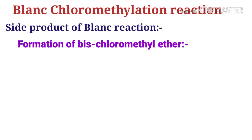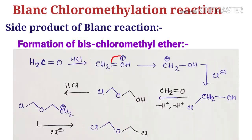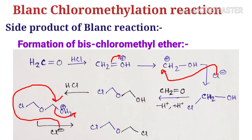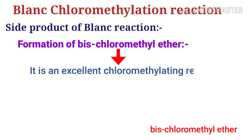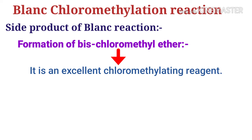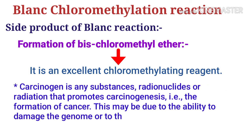The mechanism: when formaldehyde reacts in the presence of hydrogen chloride, it forms protonated formaldehyde. After chloride ion attack, and then one more equivalent of formaldehyde reacts, followed again by hydrogen chloride, to finally give bis(chloromethyl) ether. Bis(chloromethyl) ether is an excellent chloromethylating reagent and it is highly carcinogenic.